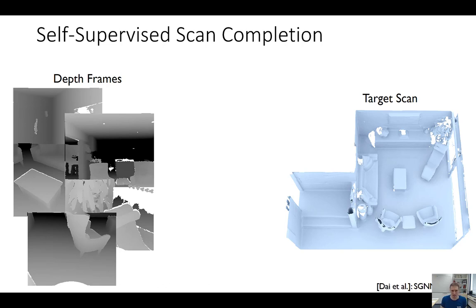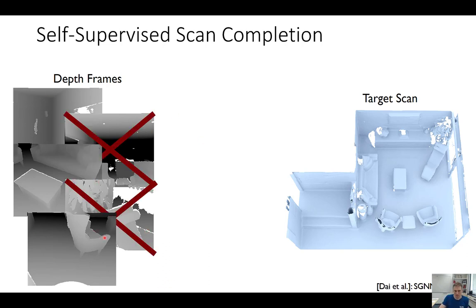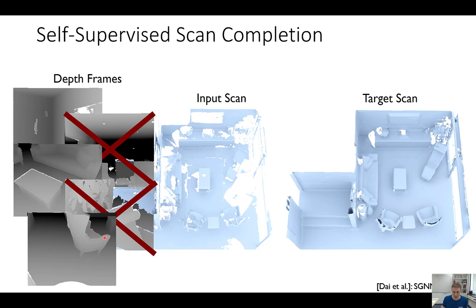The self-supervised scan completion works by taking these depth frames as input and removing some of them. If from five frames we remove two, we get an input scan from reconstruction that looks less complete than before — which makes sense since we have fewer frames available. This leaves us with the obvious idea that the input scan and the target scan are correlated, and we can use this correlation as constraints to do scan completion. We started by training a network that takes the partial scan as input and tries to predict the target.